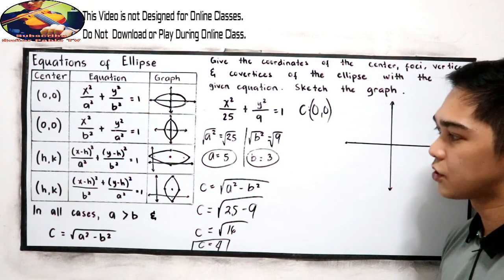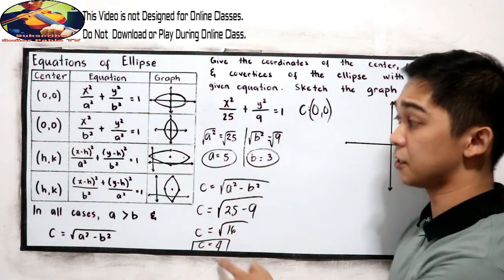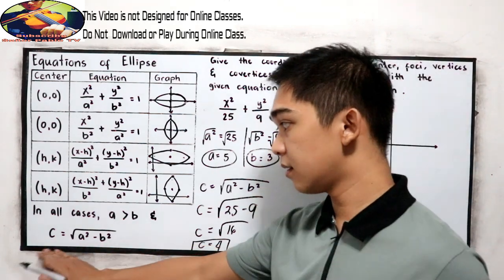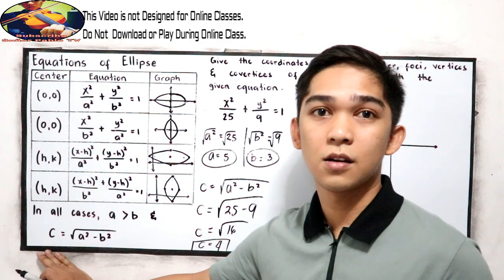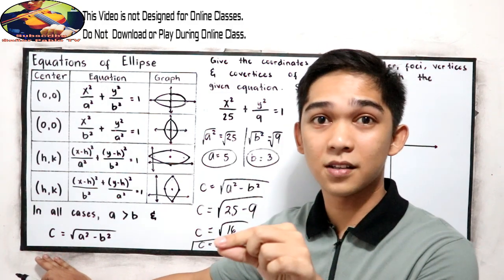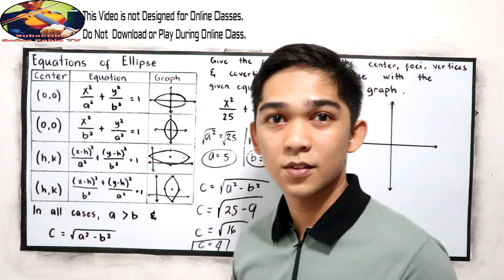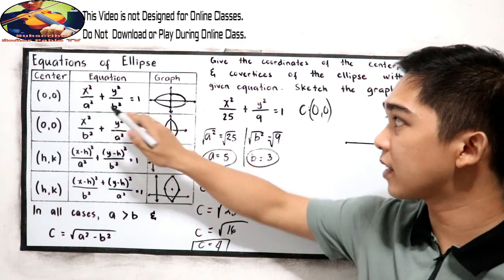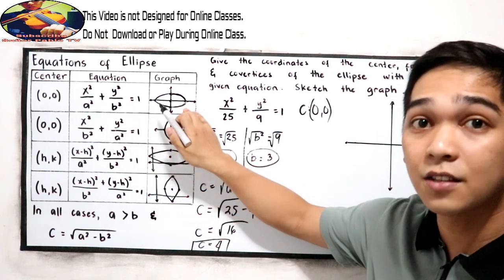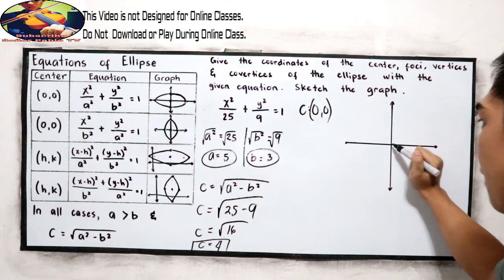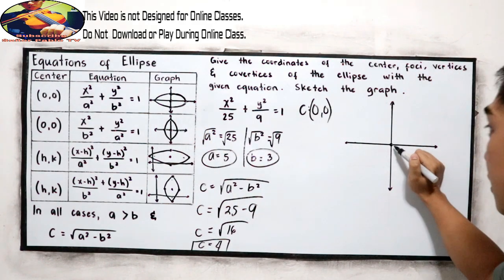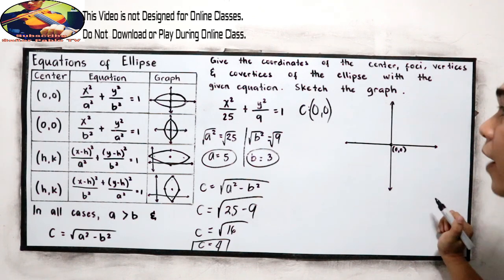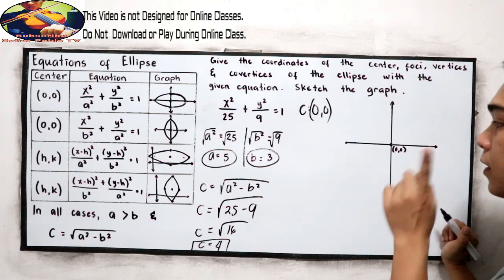Now we have the values for A, B, and C. In our discussion, C is the distance from our center to the foci. Since we are in this horizontal form, we expect the graph to look like this. Our center is (0, 0). Let us find the foci.